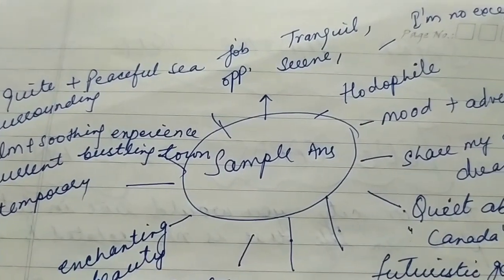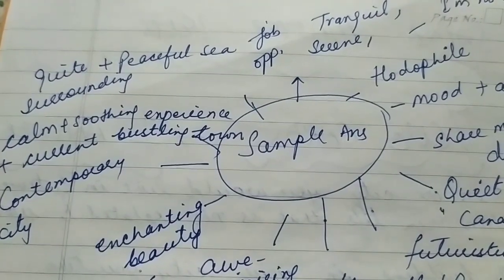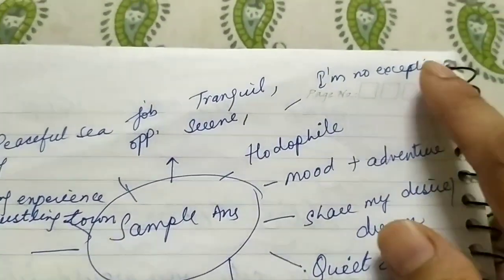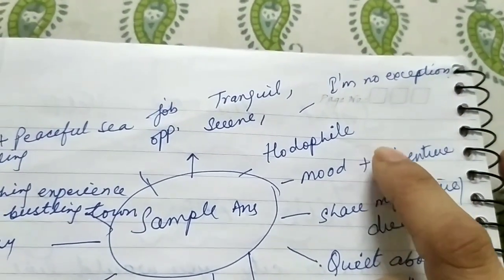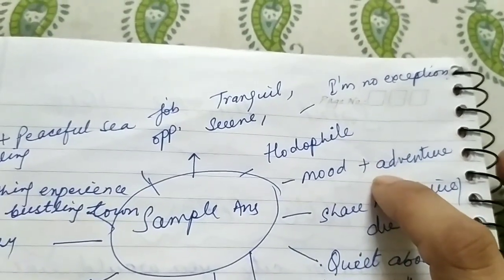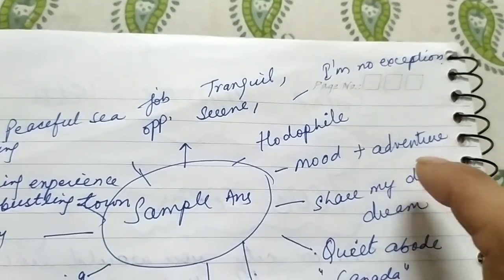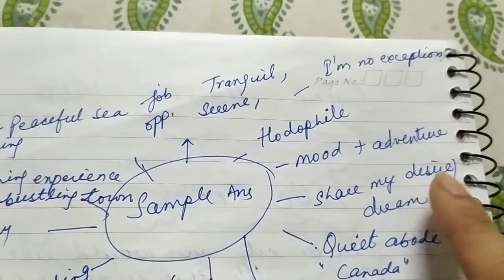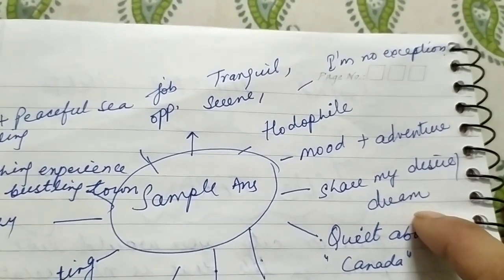Yeh hai sample answer jis mein aapko sare ke sare places ke liye answers mil jayenge — ideas milenge aur vocabulary milenge. You can use that. Aap sabse pehle bol sakte hain ki I am a traveler — ya hodophile bolte hain usse. Aap apne adventure aur mood ke hisaab se you go to various places. Aap inquisitive hain, curious hain, you explore a lot of places, unka lifestyle, unke log, unka food, traditions, rituals check kar sako. And you want to share your desire ki aapka ek dream hai that you want to go to a place.